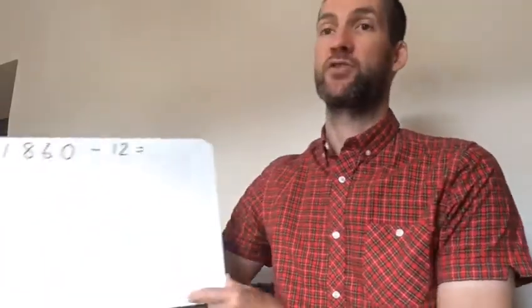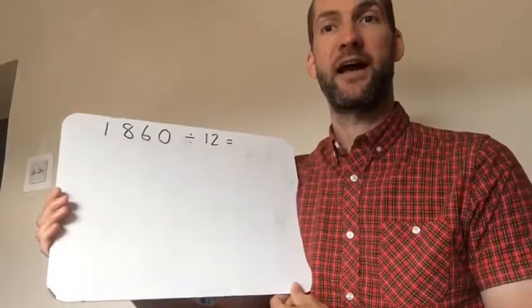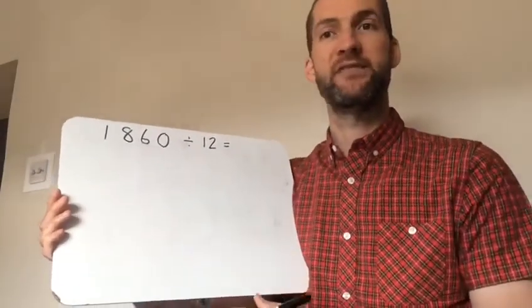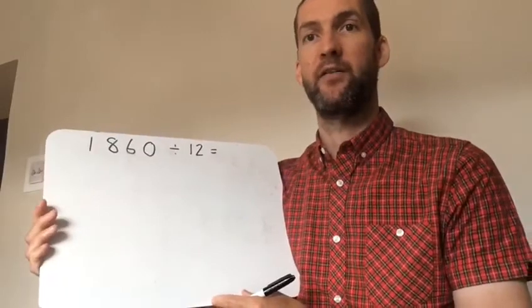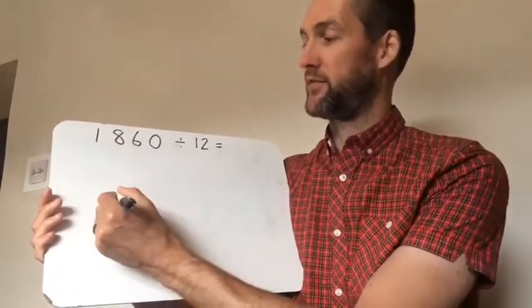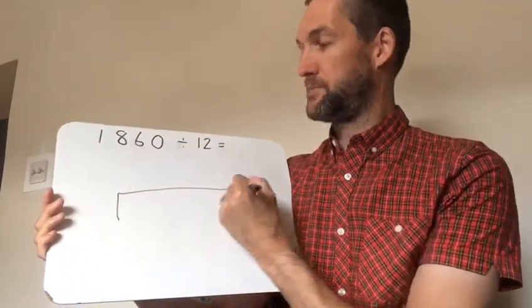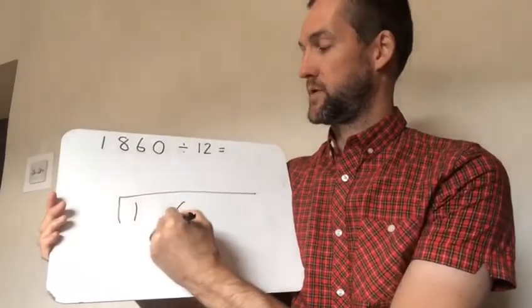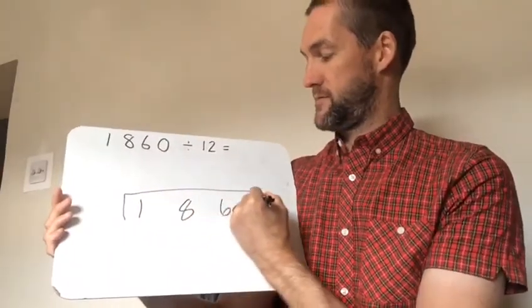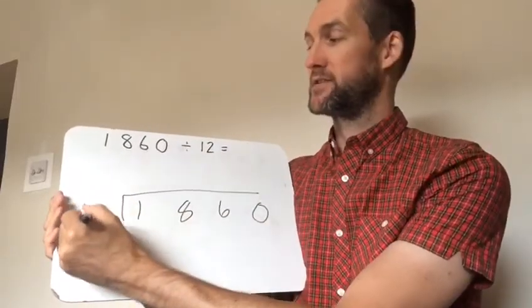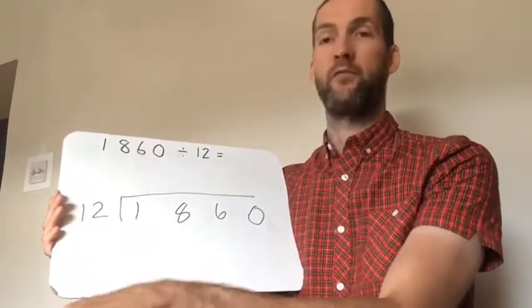So let's have a look at a calculation where the answer has no remainder. Now this calculation, 1860 divided by 12. Now we know the written method we use for division and that is the bus stop method. The larger number goes within the bus stop and the divisor, 12 in this instance, goes on the outside.